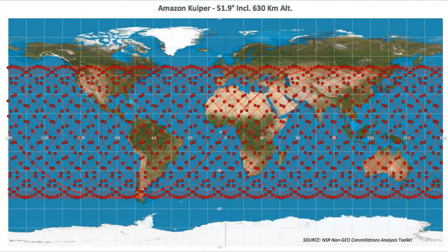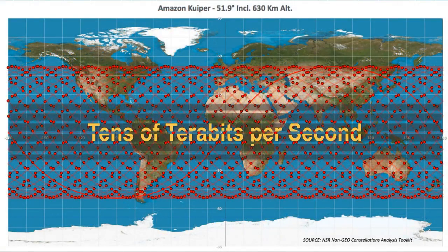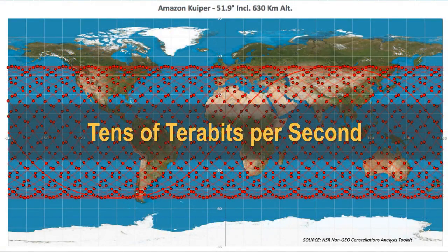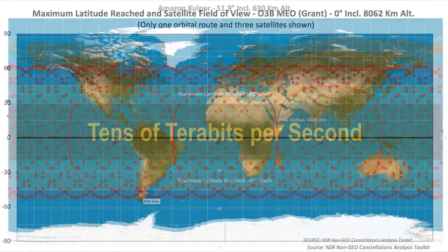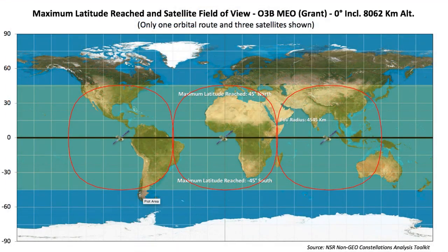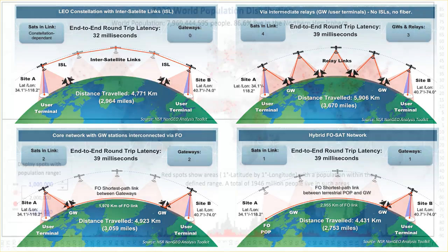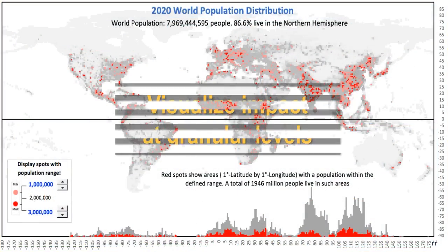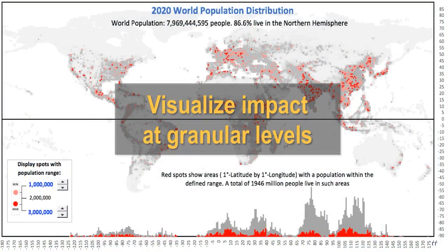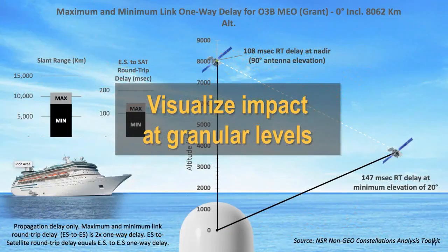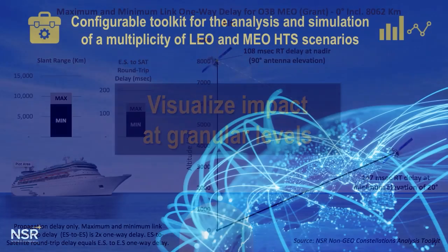These constellations, beaming tens of terabits per second, can transform our industry, making it vital for key decision-makers to have the ability to visualize this impact at a granular level. NSR's NCAT provides this capability.